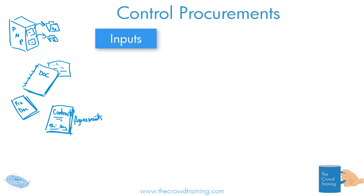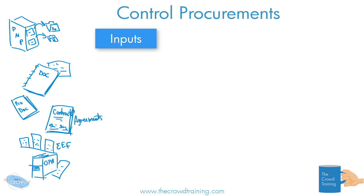All kinds of different agreements are going to be inputs, because we're trying to control, monitor, and make sure things are going as planned — and if not, figure out what we're doing to rectify that. As always, we are products of our environment, so we have the culture, designs, and everything we're operating in: our enterprise environmental factors. We may also have templates and guidelines in our OPAs — organizational process assets — which are useful in helping us maintain and monitor and control the procurements throughout the project.